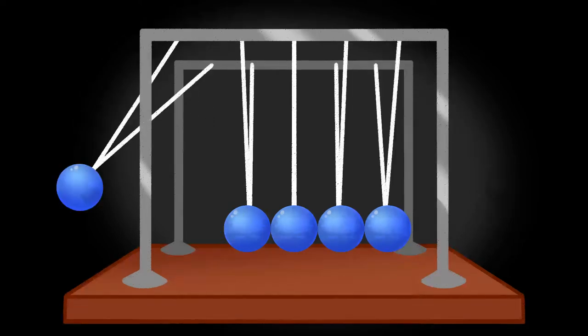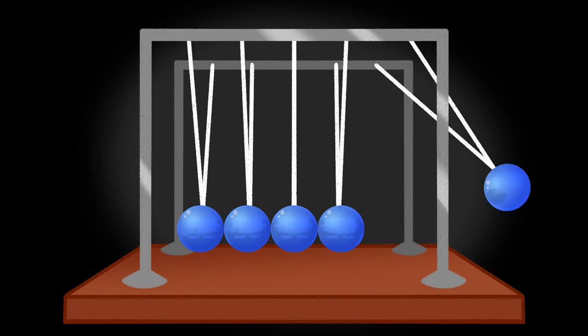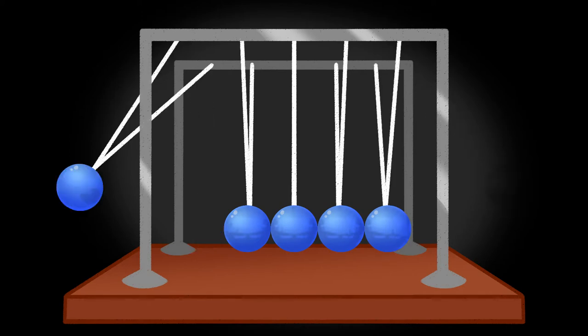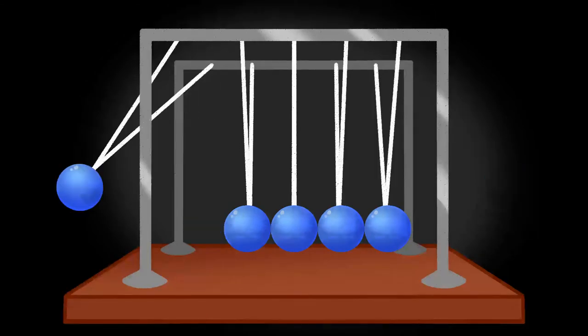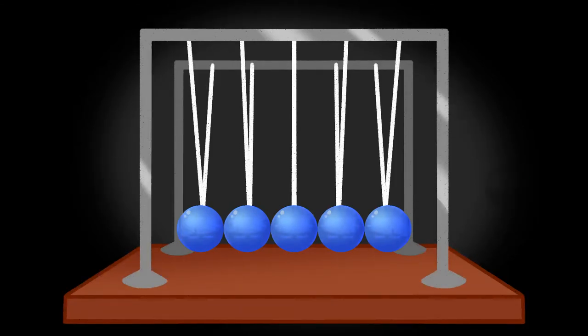Velocity is the rate at which something moves positions in any given direction. Velocity magnitude or speed is referring to things like miles per hour and meters per second, which is typically the way that we talk about velocity in our everyday lives.